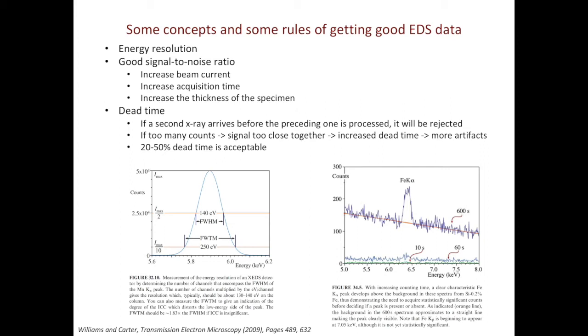When collecting EDS data, you always want good signal-to-noise ratio. There are a few strategies. The first is to increase the beam current. By increasing the beam current, you increase the events of inelastic scattering. The second strategy is to increase the acquisition time. Here's one good example from the textbook. When the acquisition time is 10 seconds, you don't really see the iron peak. When you increase the acquisition time to 60 seconds, you see a small peak. When you do acquisition at 600 seconds, you see a very prominent peak.